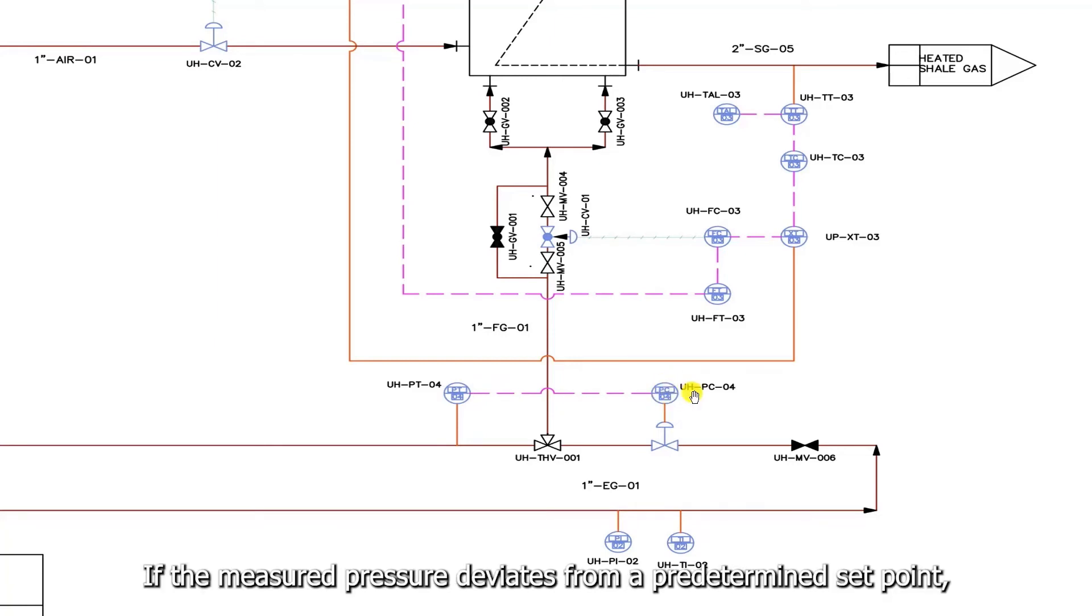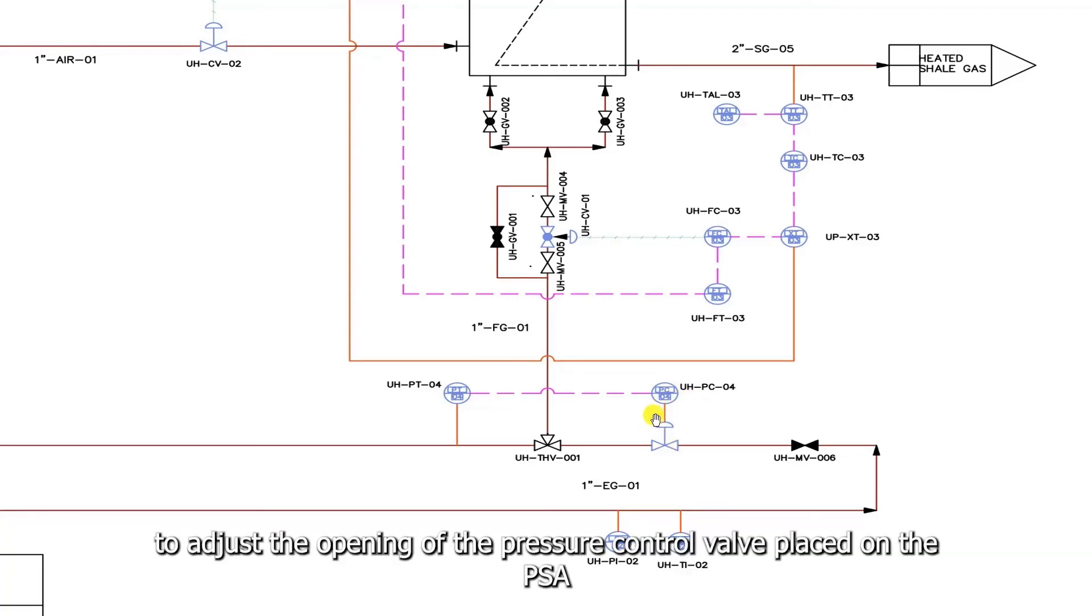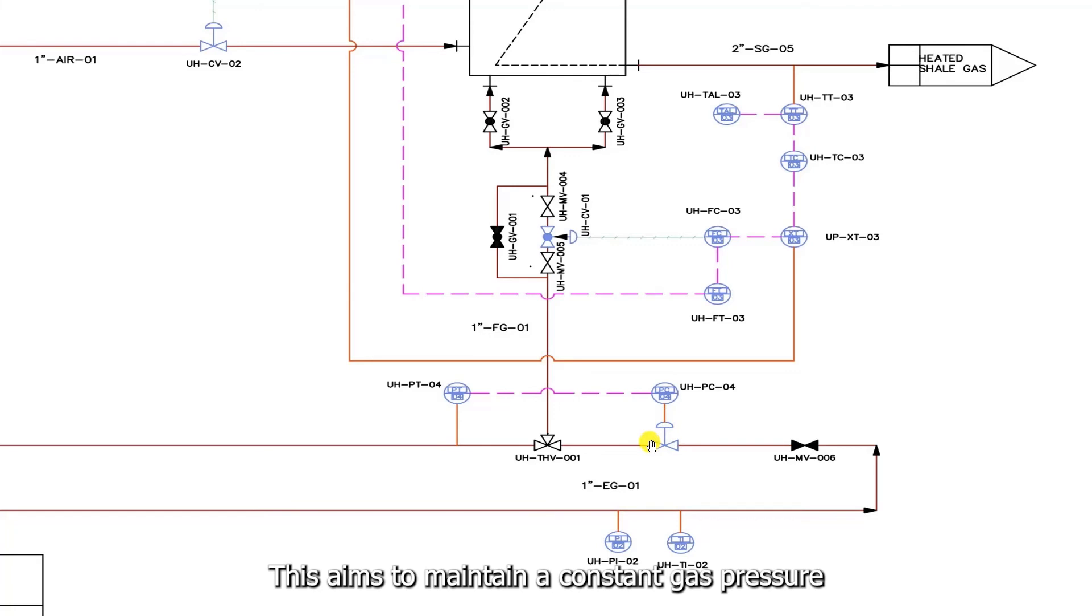The transmitter then sends the pressure measurement to a pressure controller. If the measured pressure deviates from a predetermined set point, the pressure controller will trigger a control signal to adjust the opening of the pressure control valve placed on the PSA exhaust gas. This aims to maintain a constant gas pressure supplied to the burners. Now, as pressure and flow are interrelated, a constant gas pressure is also equivalent to a constant gas flow.